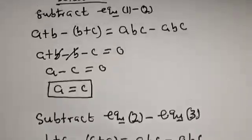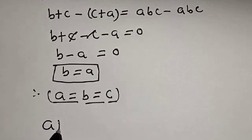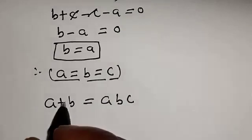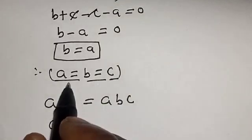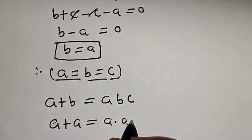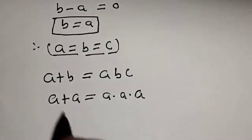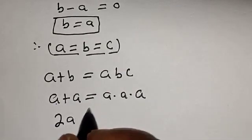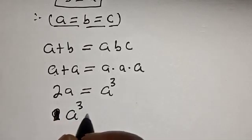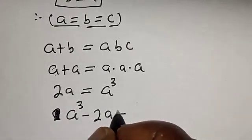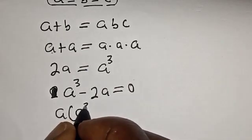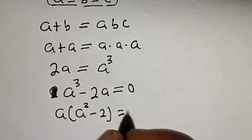From equation one, a plus b equals abc. Since a equals b equals c, we substitute: a plus a equals a times a times a. So 2a equals a cubed. Rearranging, a cubed minus 2a equals zero. Factoring out a, we get a times (a squared minus 2) equals zero.